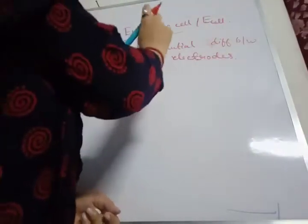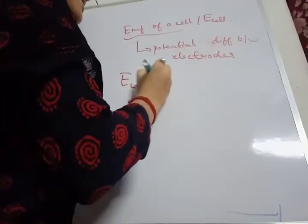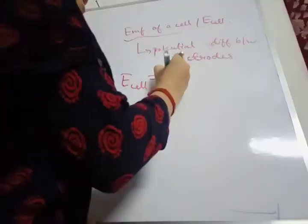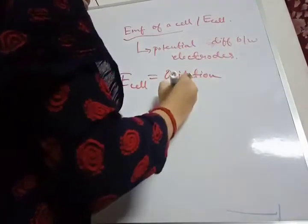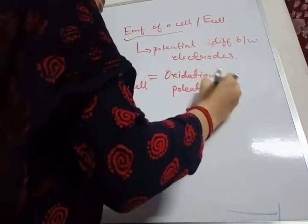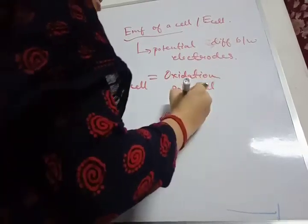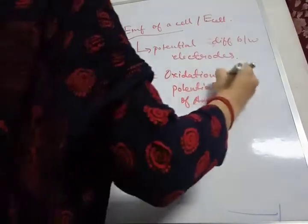This is all for a galvanic cell. So E cell is written as the oxidation potential of anode — because at anode, oxidation occurs — plus the reduction potential of cathode.